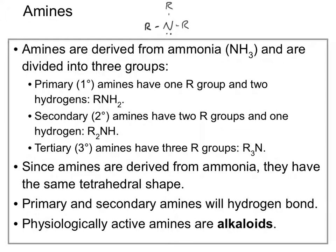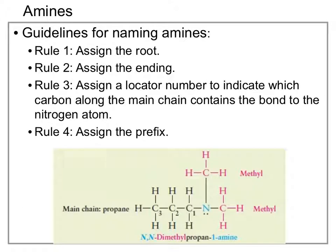Since amines are derived from ammonia, they will all have the same basic tetrahedral electron domain geometry with a trigonal pyramidal molecular geometry. Primary and secondary amines will be able to form hydrogen bonds, since they do have a nitrogen directly bonded to a hydrogen. The naming of our amines will again take the same basic approach as all other compounds. We're going to look for our longest main carbon chain, which will give us our root. We're going to assign our ending — in this case our ending will be -amine. We're going to use a locator number to indicate which carbon has the amine attached, and then we will also assign any prefixes for any substituents, including any substituents coming off of the nitrogen.